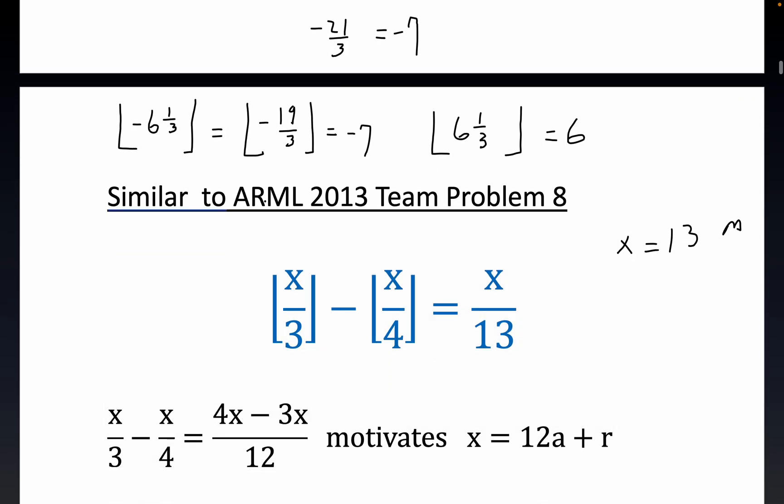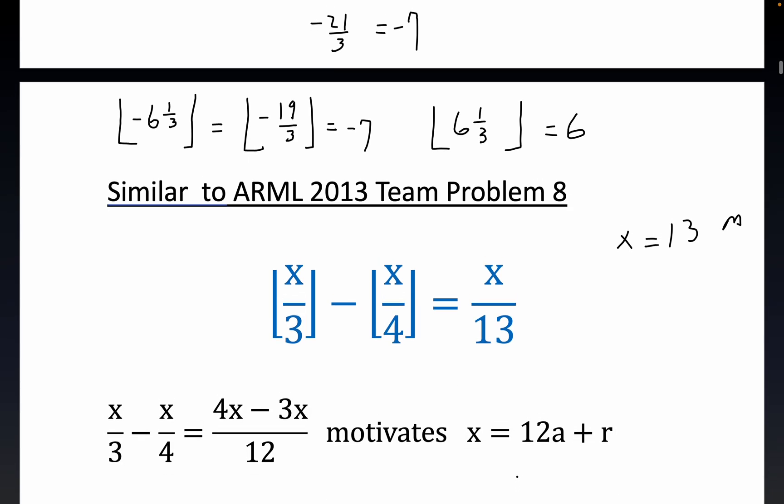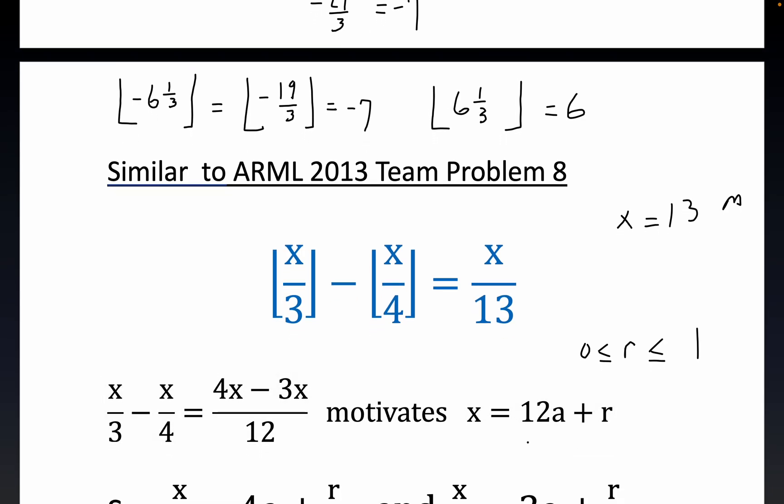Now, this next step, I read it from the solution document published by these guys, the ARML. I thought it was pretty neat. They decided to write x in this division algorithm format. It's motivated by the fact that three times four is 12, a common denominator, and also by the fact that if you divide any number by 12, you get a remainder r that's stuck between 0 and 11 inclusively, and r and a are integers. Also something that turns out to be rather important, you can write x minus r over 12 equals a also.